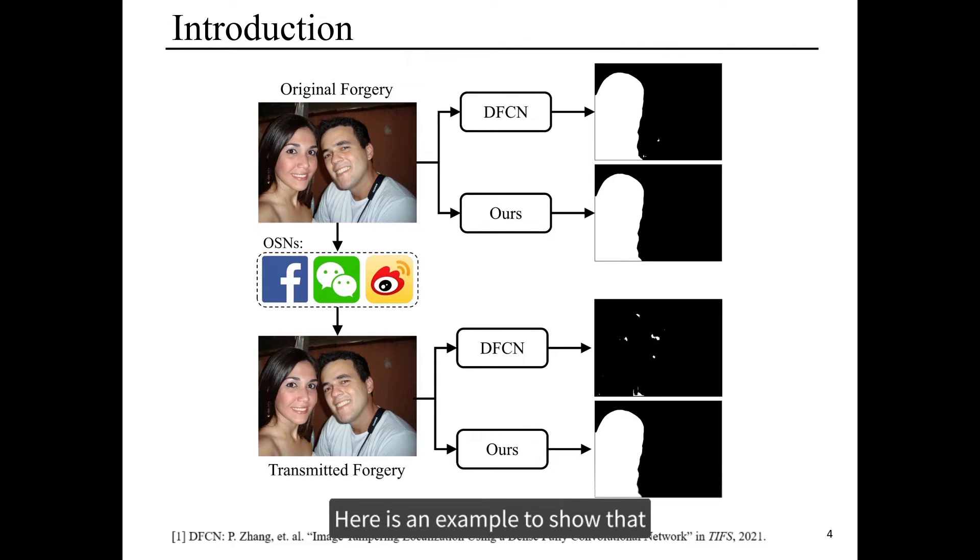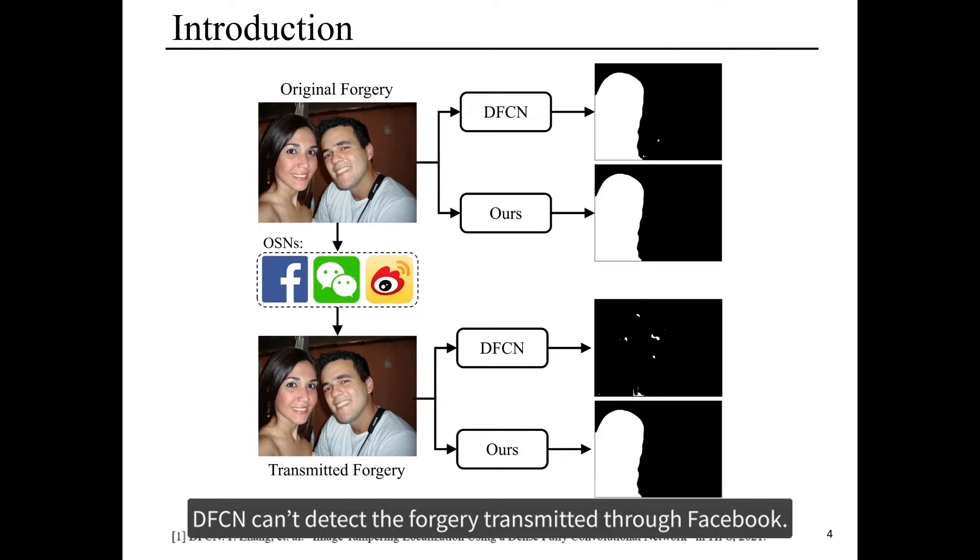Here is an example to show that DFCN can't detect the forgery transmitted through Facebook.